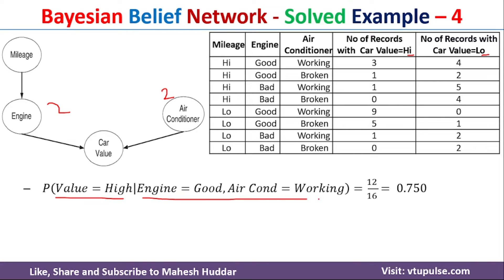For the first condition — engine is good and air conditioner is working — we consider only those examples. Adding them: 3 plus 4 is 7, plus 9 is 16, plus 0 is 16. Out of those 16 examples, how many have car value equal to high? That is 3 plus 9, which is 12. So 12 out of 16.